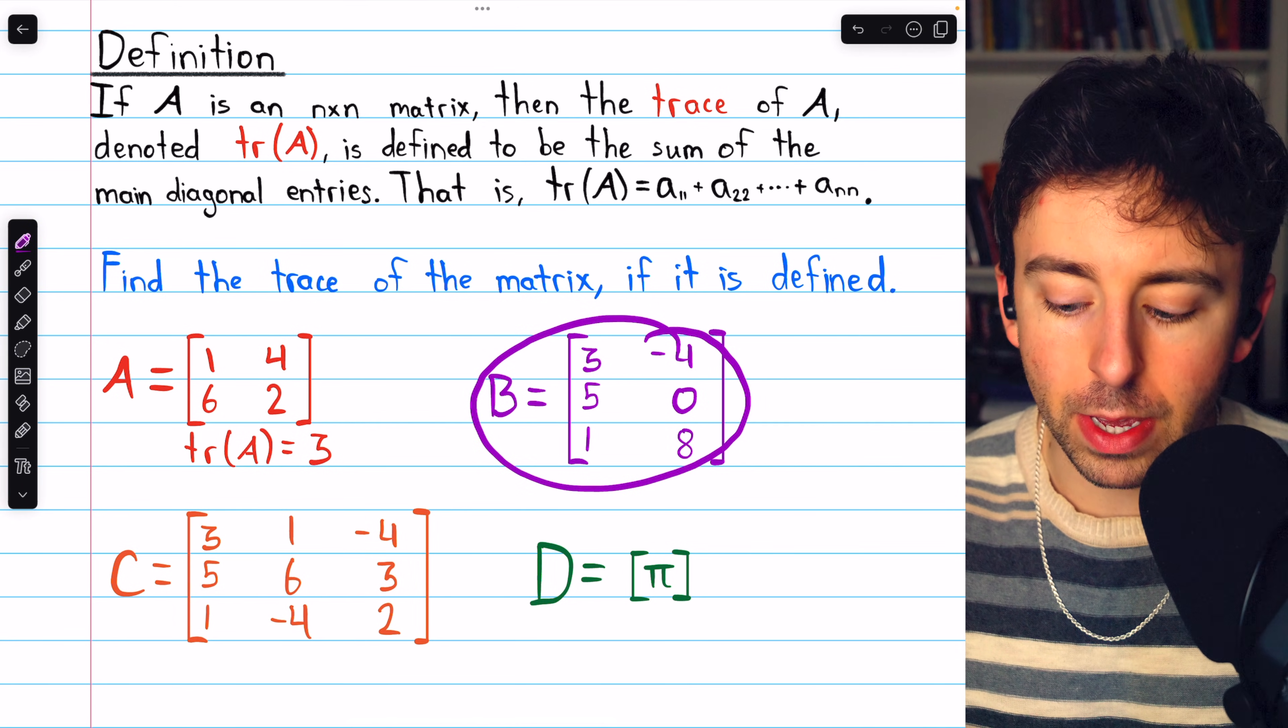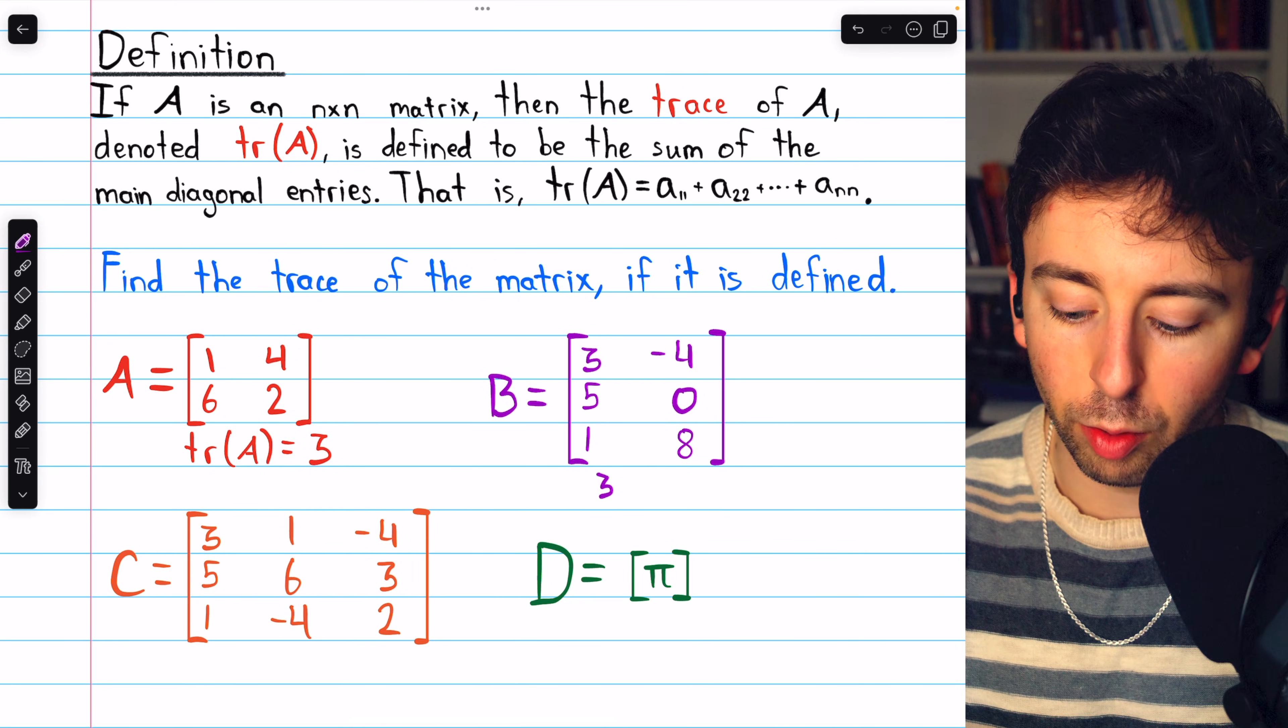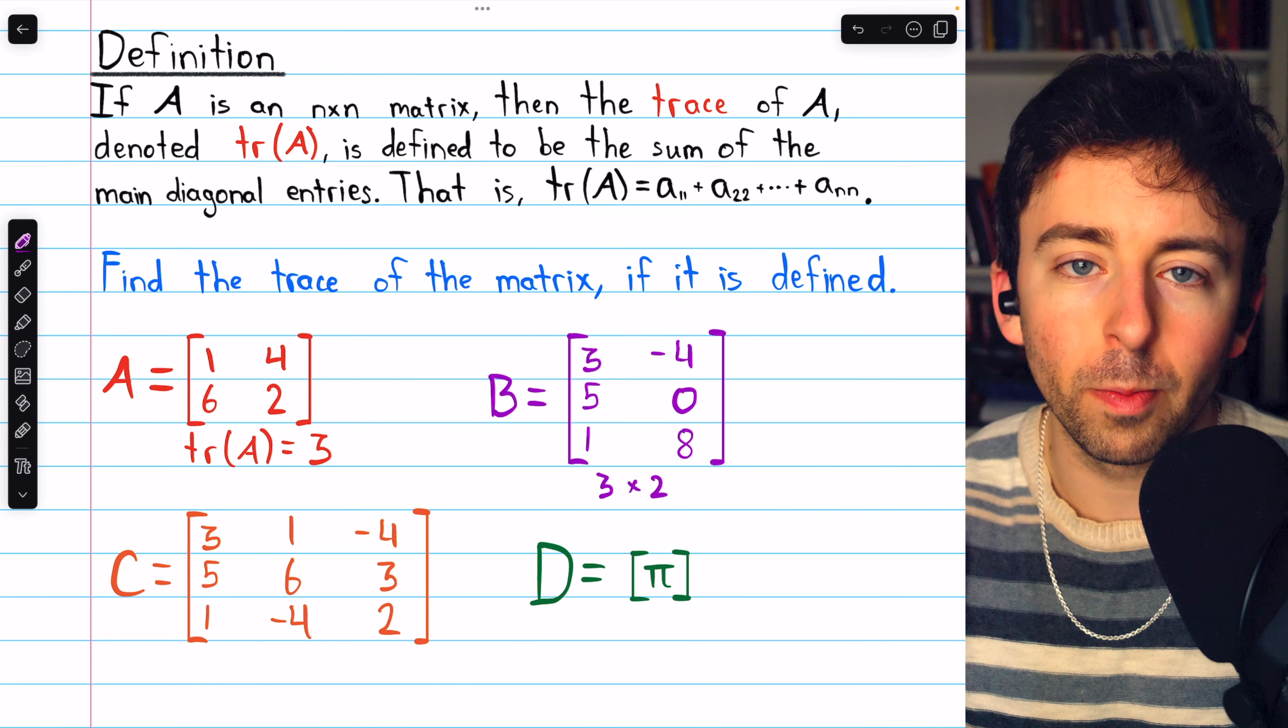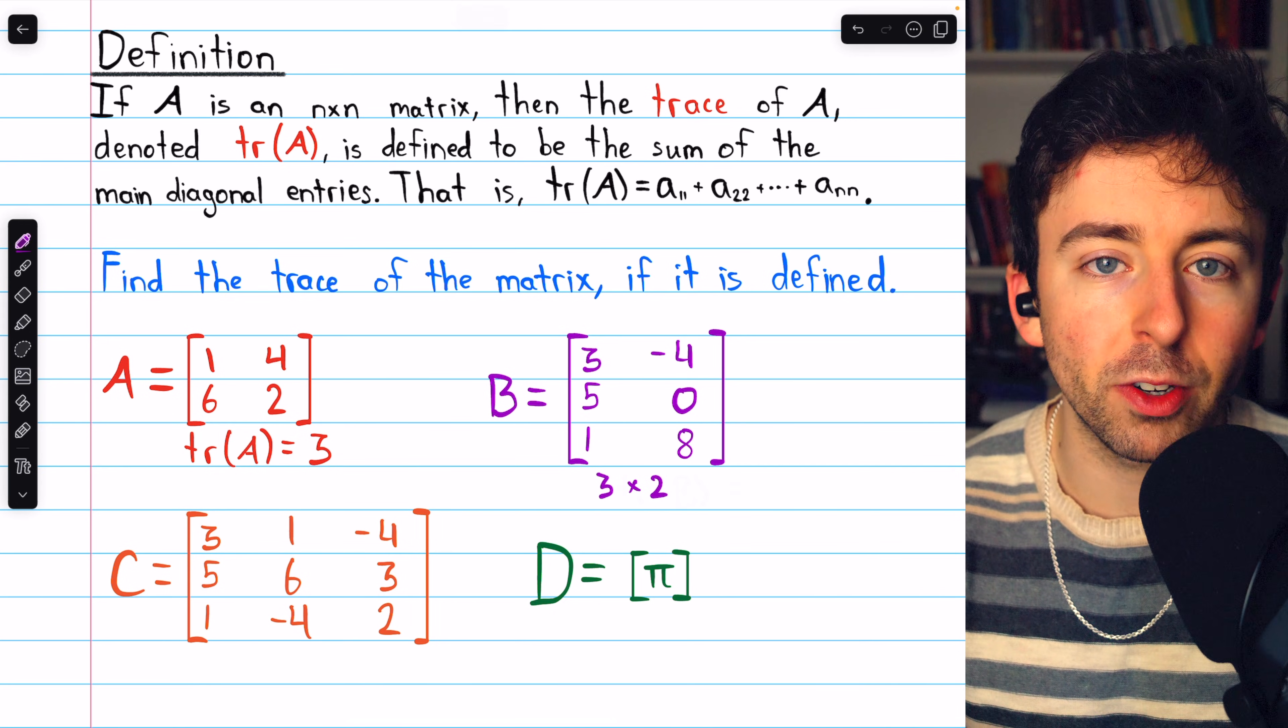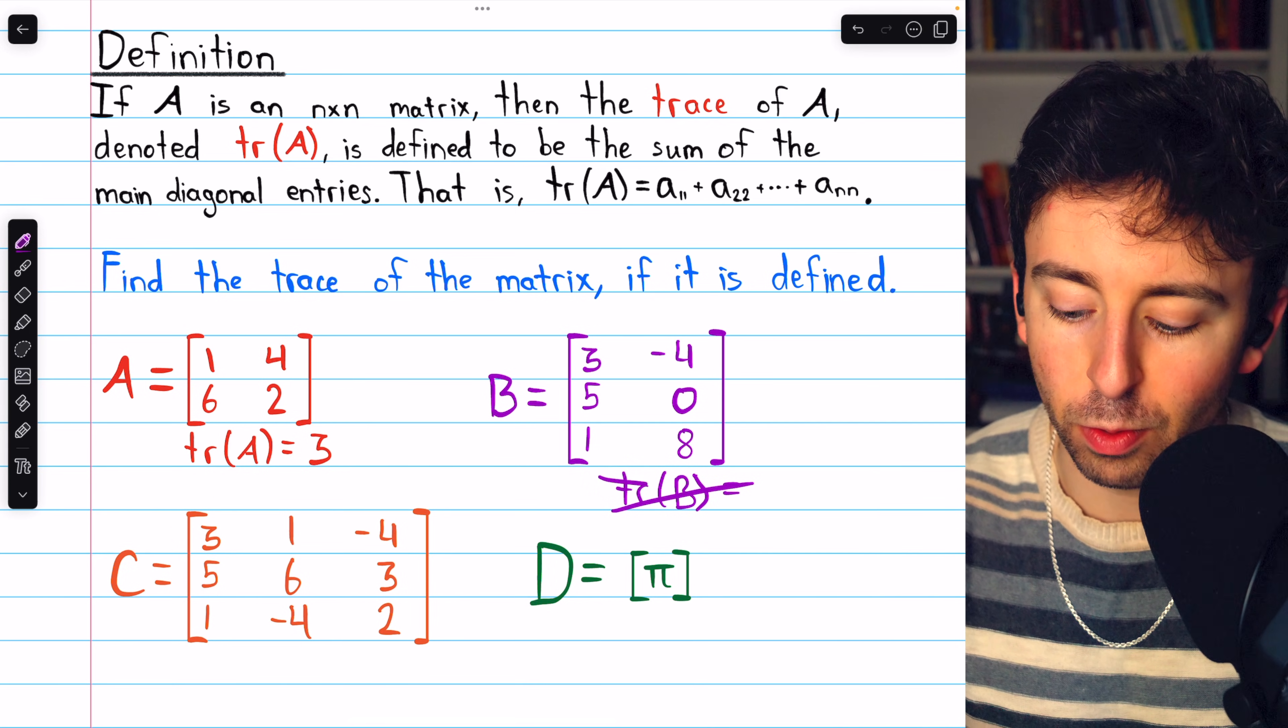What about matrix B? The dimensions of matrix B are 3 by 2, so the trace of B is not defined because B is not a square matrix. So I'll just put a big X through trace of B.